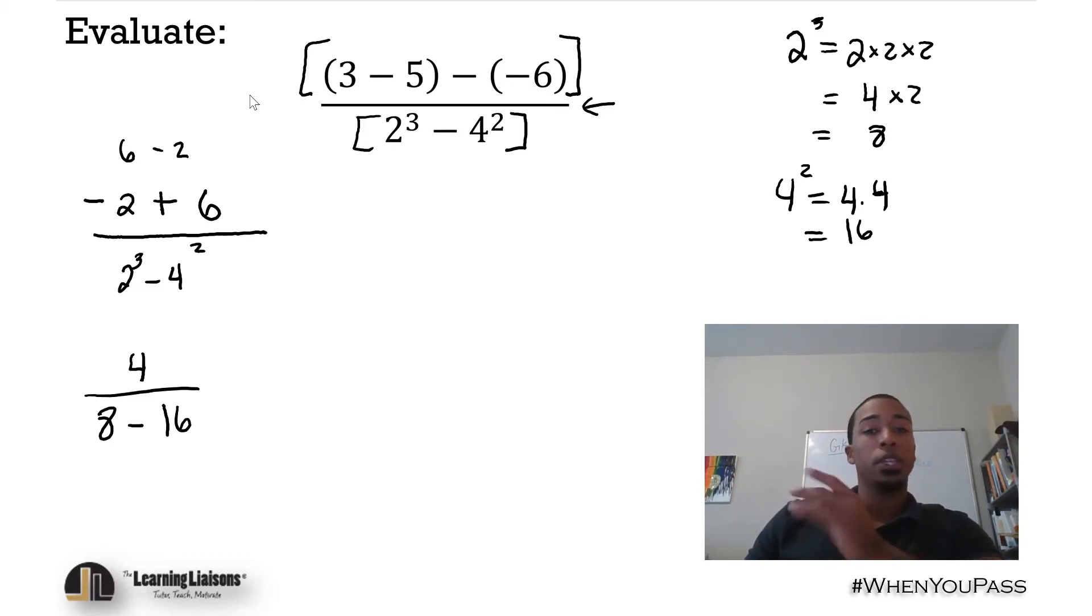So 8 minus 16, what's that going to be? 16 minus 8 would be 8, but because it's the other way around it'd be negative 8.